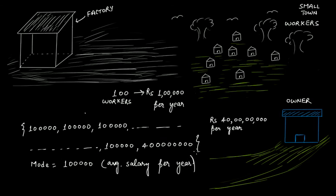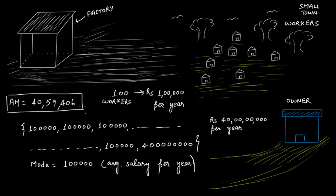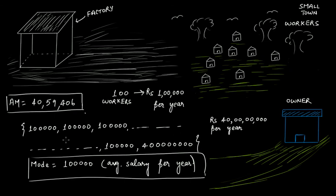You can clearly see how exactly mode is telling us the correct average salary per year for this small town where 100 workers are actually earning just 1 lakh per year. When you calculated arithmetic mean, it gave you around 40 lakh 59,406, while mode gives you 1 lakh. Comparing both values, you can see how mode gave the more accurate result. This is the importance of choosing correctly — it all depends upon the condition whether you'll use arithmetic mean or mode.